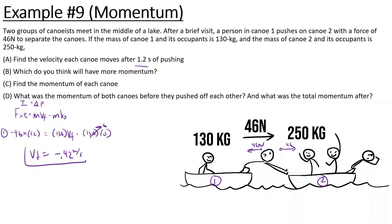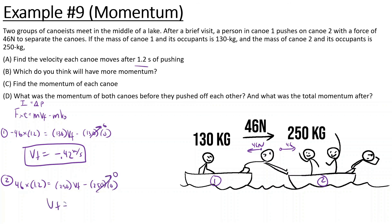For canoe two, it experiences positive 46 newtons for 1.2 seconds with mass 250 kg: 46 times 1.2 equals 250 times vf, giving vf equals 55.2 divided by 250, approximately 0.22 m/s.